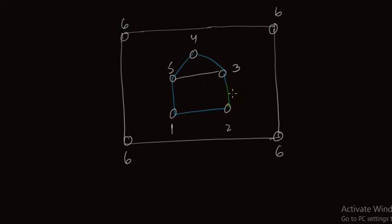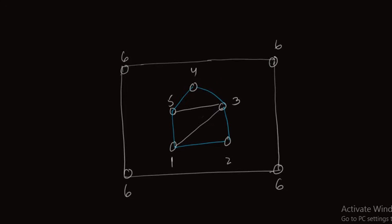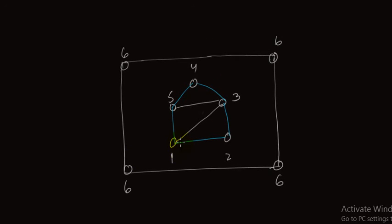Other possible edges are: we can join vertex 5 and vertex 3, and vertex 5 and vertex 1. We can also join 5 and 2, but we can join only one of these — either 1 and 3, or 5 and 2. Now as we are trying to draw a complete graph of order 6, we have to join every vertex to the rest of the vertices.